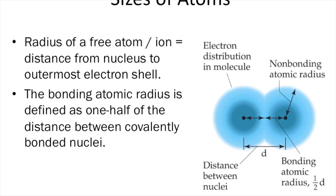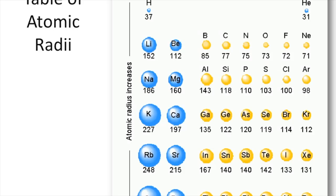The size of atoms, or the atomic radius, is basically the distance from the nucleus to the outside shell of electrons. Atomic radius decreases going from left to right on the periodic table and increases going down from top to bottom.